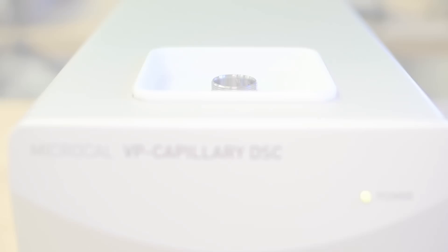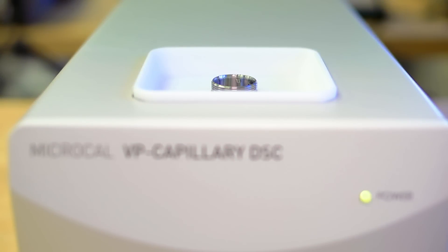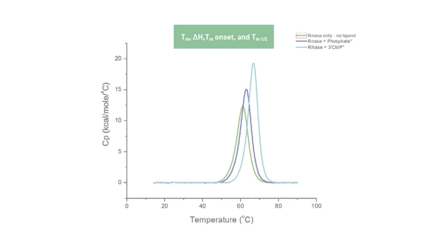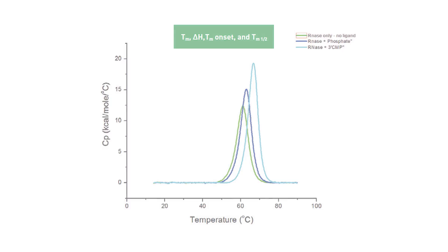Differential scanning calorimetry is a powerful analytical tool for characterizing the stability of proteins and other molecules. The MicroCal VP Capillary DSC provides fast, accurate transition midpoint TM determination and can generate a thermodynamic profile for samples to provide insight into the factors that affect conformation and stability.